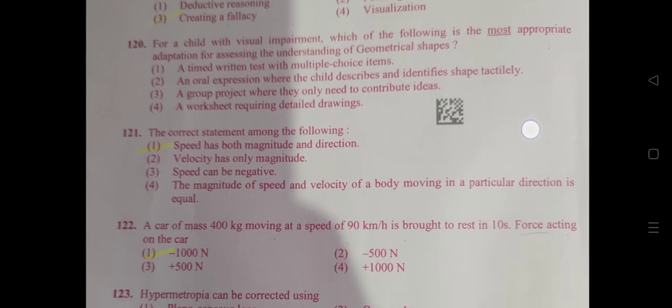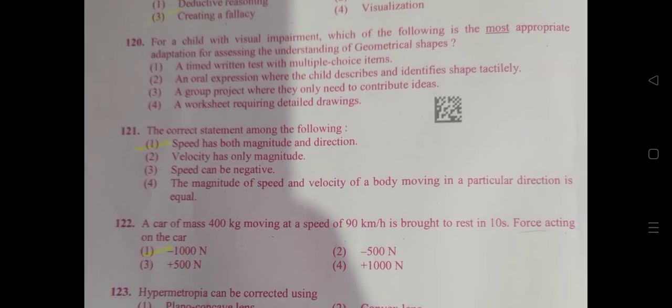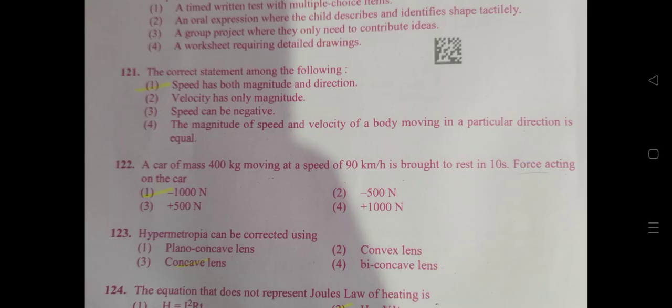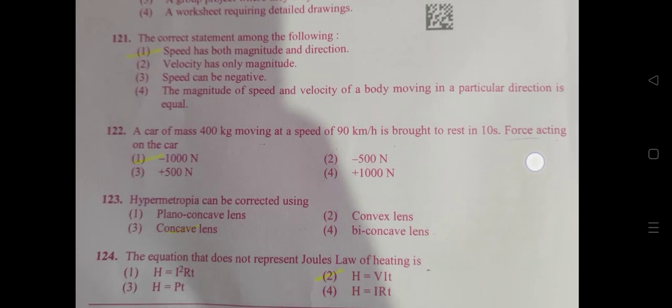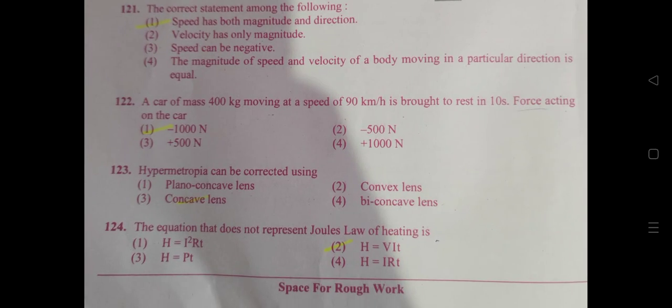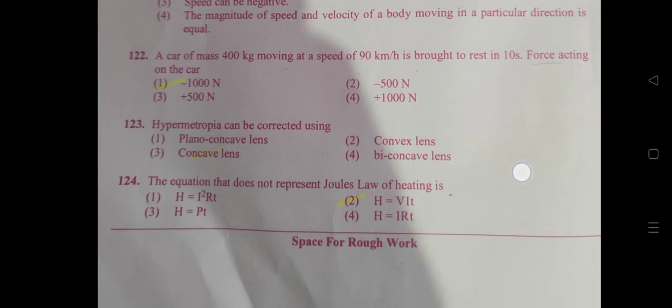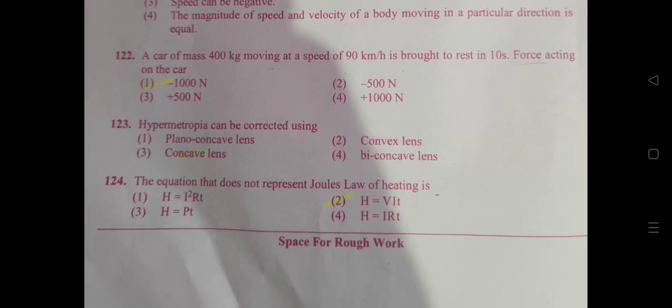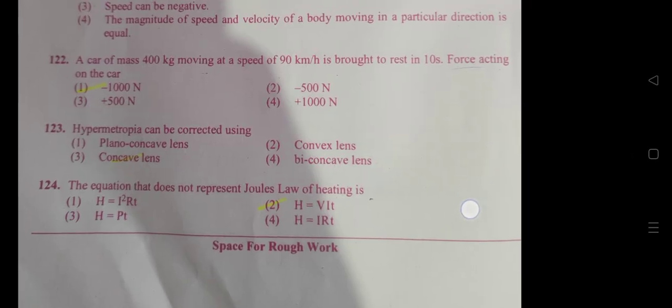Question number 121: speed has both magnitude and direction. Question number 122 is minus 1000 N. Question 123 is concavalence. Question 124 is H is equal to VIT.